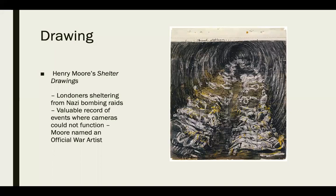The first image is Henry Moore's shelter drawings. It's a really good example of how helpful drawing can be, especially before the late 1800s before we had cameras or other ways of documenting information beyond writing. Drawing was really useful for helping people understand what was going on in the world they couldn't see in person. These shelter drawings depicted Londoners sheltering from Nazi bombing raids — a valuable record of events where cameras could not function. Moore was named an official war artist for these drawings.